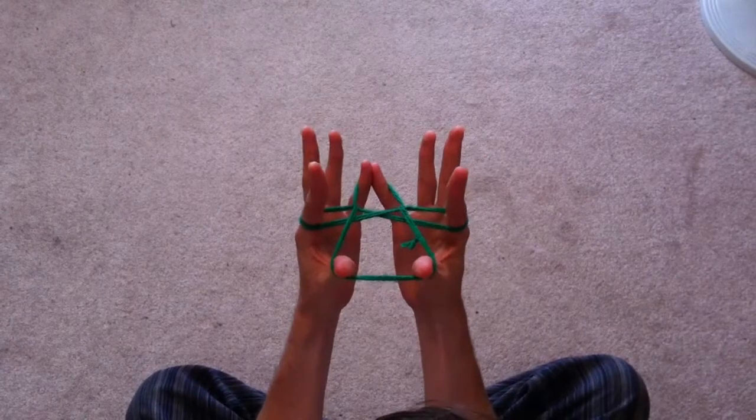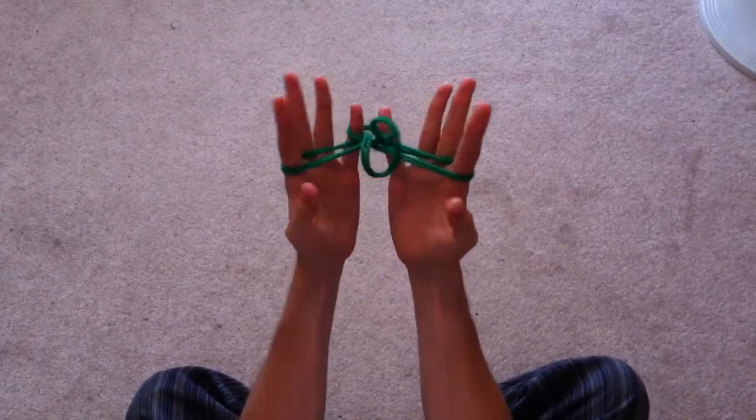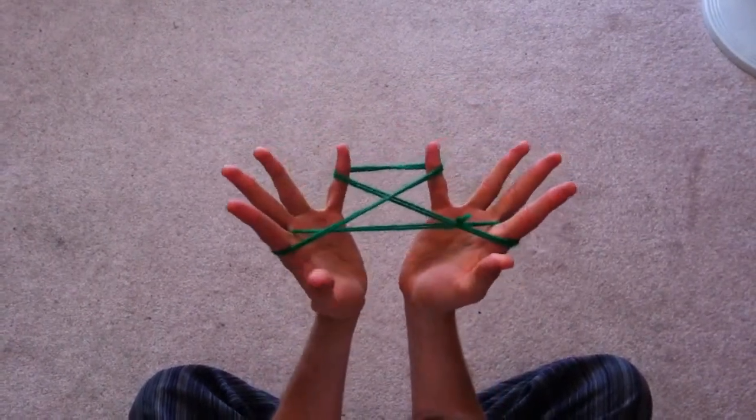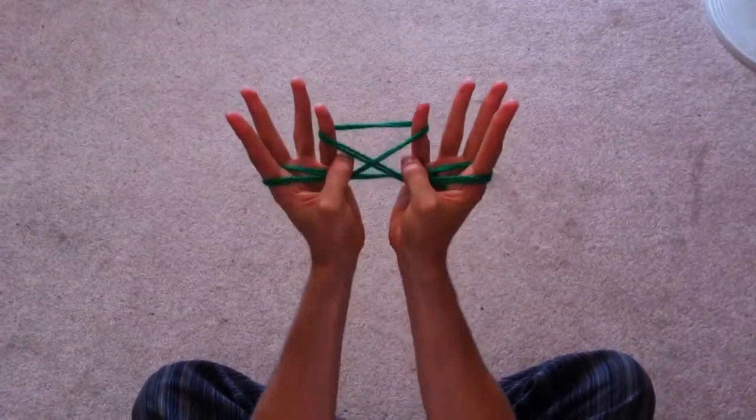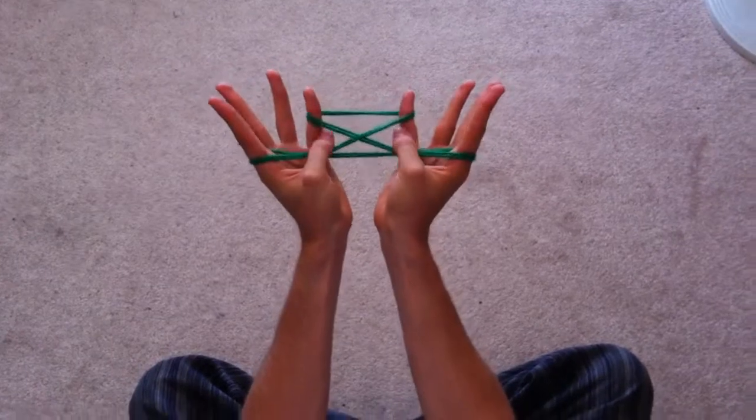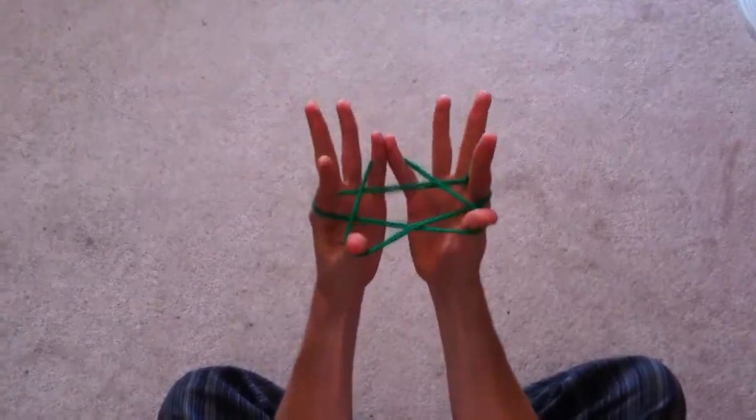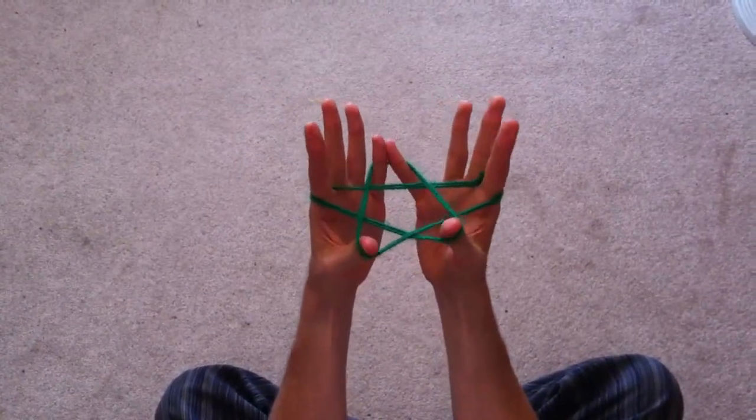And from this point, let go of thumbs. Now the thumbs are going to come over top of these and take the near pinky strings. Pull them back and you have a star.